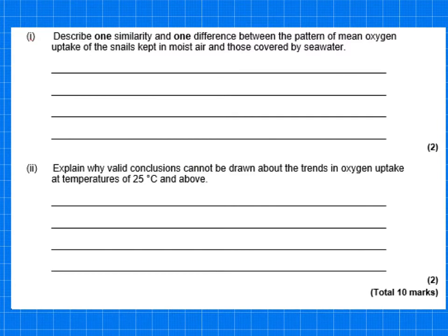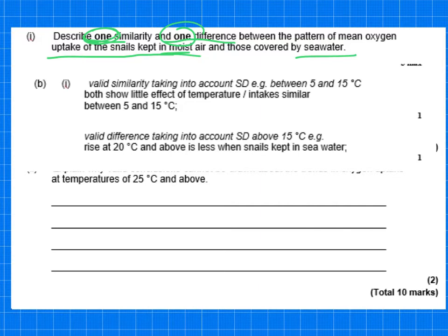So the first one asks one similarity and one difference. Notice it's in bold. So don't give more than one. Between the pattern of mean oxygen uptake of the snails kept in moist air and those covered by seawater. So I think I pretty much covered it when I was looking at the data just a minute ago. So both show little effect of temperature between 5 and 15 degrees C. So if you think the command word is describe, when it says describe, use the data that they've given you. So specify the temperature. So that is a similarity. And then at 20 degrees C and above, it's less when the snails are kept in seawater because you're comparing seawater with moist air.